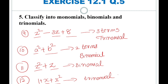We have covered all 12 expressions in Exercise 12.1 question 5. There are 12 expressions classified as monomials, binomials, and trinomials. Remember: one term is monomial, two terms is binomial, and three terms is trinomial.